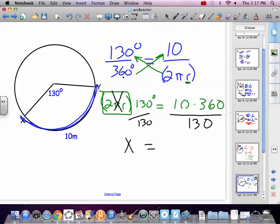Because it was in the bottom here, so it's got to be in the top on the other side. Divide it by 130. There we go. So 10 times 360. 10 times 360 divided by 130 is 27.69 meters. It's bigger than 10, so that's good because 10 was only part way around the circle. 27 is all the way around the circle.